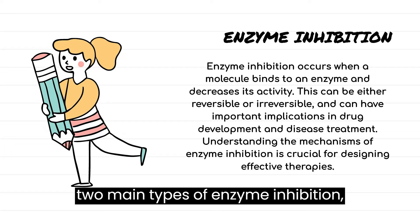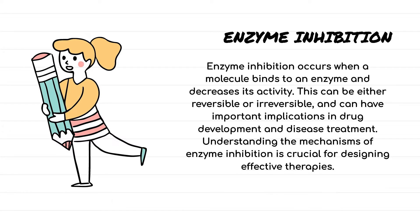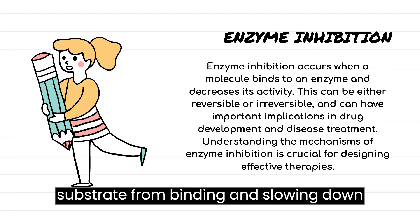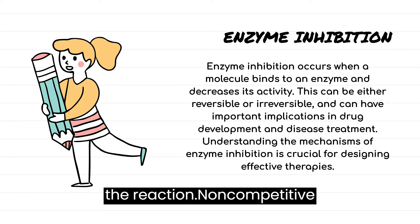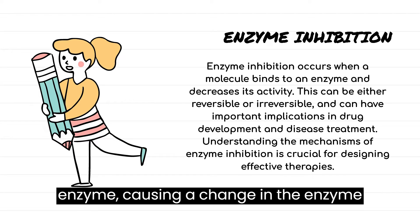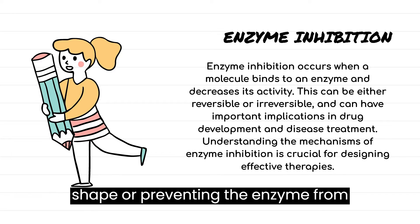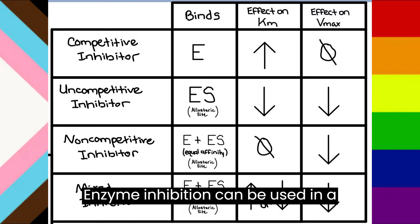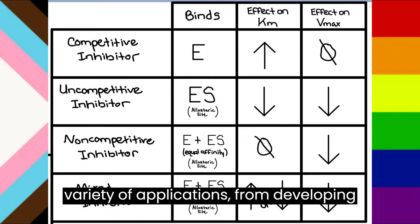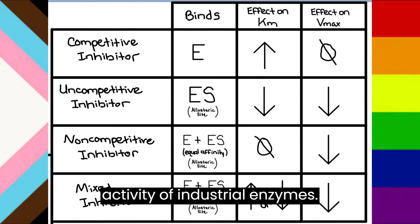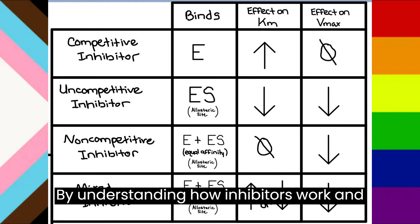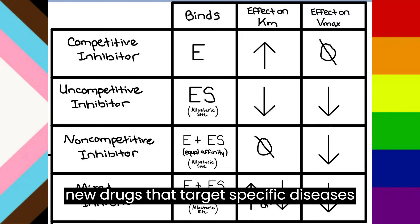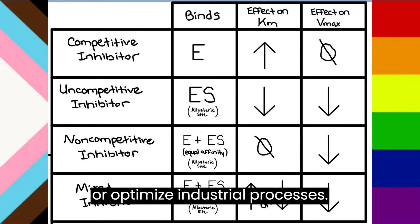There are two main types of enzyme inhibition: competitive and non-competitive. Competitive inhibitors bind to the active site of an enzyme, preventing the substrate from binding and slowing down the reaction. Non-competitive inhibitors bind to another site on the enzyme, causing a change in the enzyme's shape or preventing the enzyme from interacting with the substrate. Enzyme inhibition can be used in a variety of applications, from developing new medications to controlling the activity of industrial enzymes. By understanding how inhibitors work and identifying specific inhibitors for target enzymes, scientists can design new drugs that target specific diseases or optimize industrial processes.